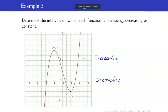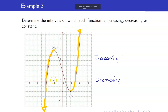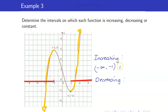What about this one? Where is the part where it is increasing? Remember, when you trace your graph, you do it from left to right. You don't say that this one here is increasing if you're going from right to left. So you read the graph from left to right. That would be negative infinity up to negative 1, union 1 to infinity. And it is decreasing on the remaining part — that's negative 1 up to 1.